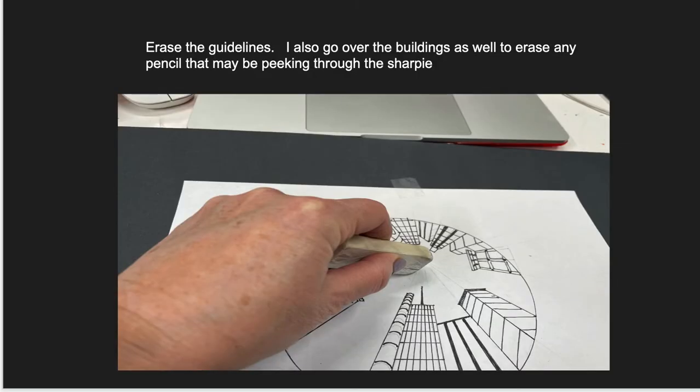Here we go now. That's why I told you to draw lightly. Here we go to erasing now. You're going to erase all of the guidelines you didn't need. And I also go over the entire building so that all of the pencil that might be peeking underneath the Sharpie is gone.